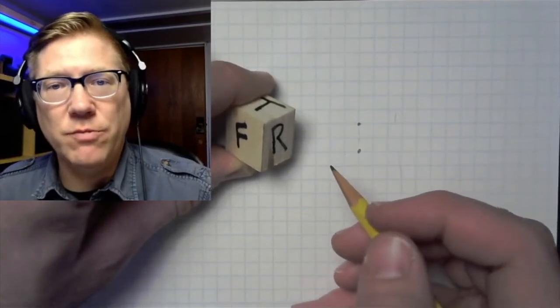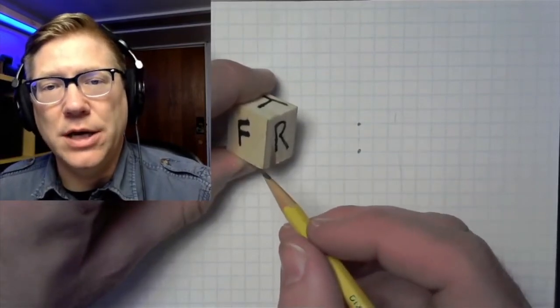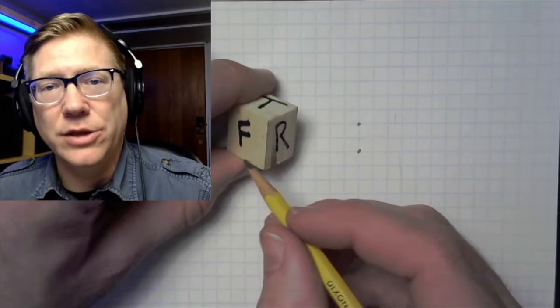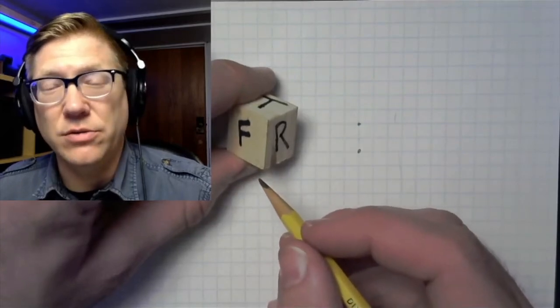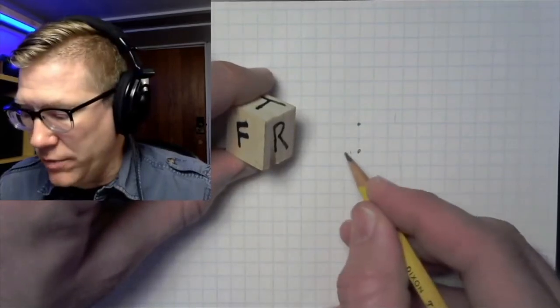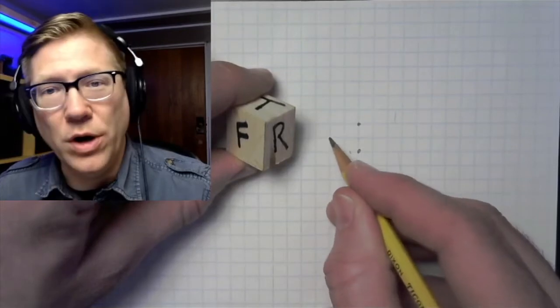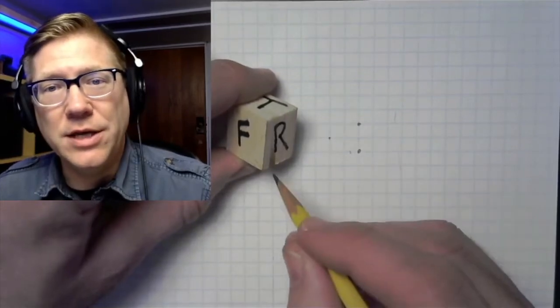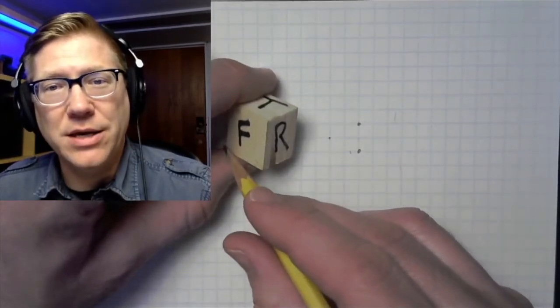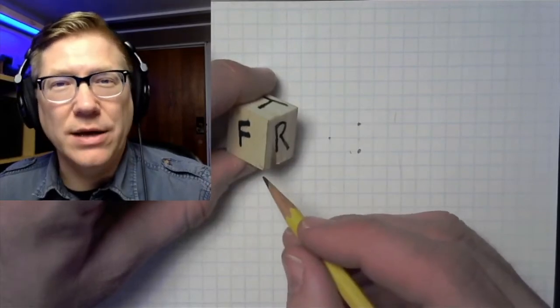Now the trick here with regular graph paper is that I'm going to get this line at the correct angle, or really close to the correct angle, by just counting over two and up one. That's going to give me this corner back here at about the right angle.